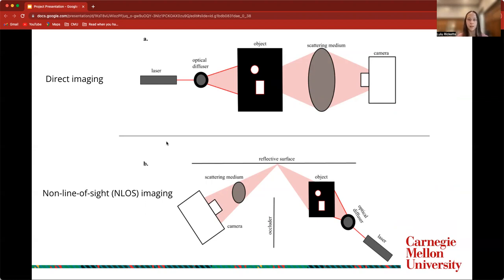For the non-line of sight imaging setup, the laser's beam passes through the object and then reflects off of a surface, through a scattering medium, and is finally imaged by the camera.